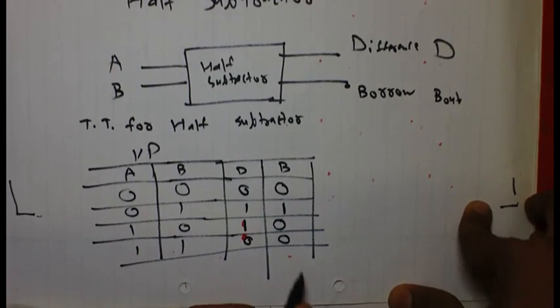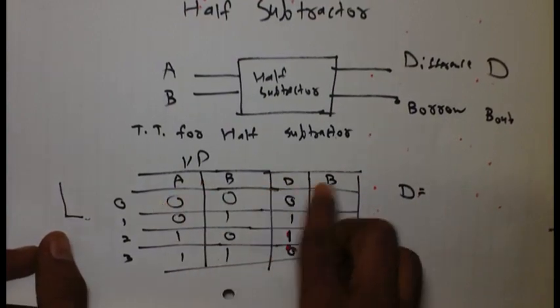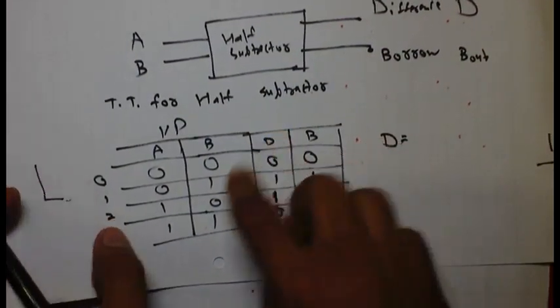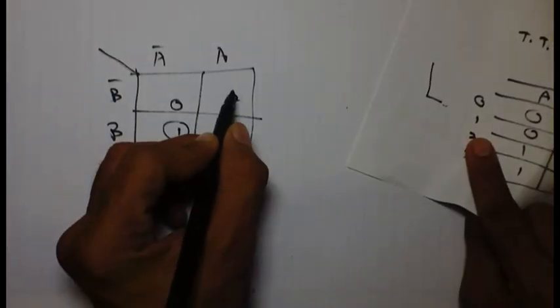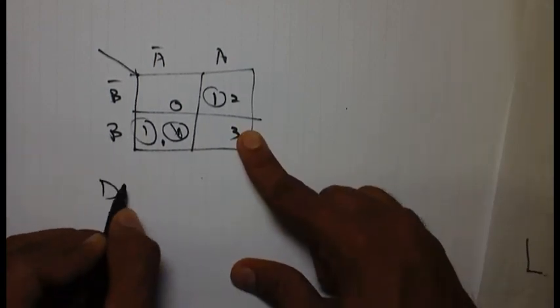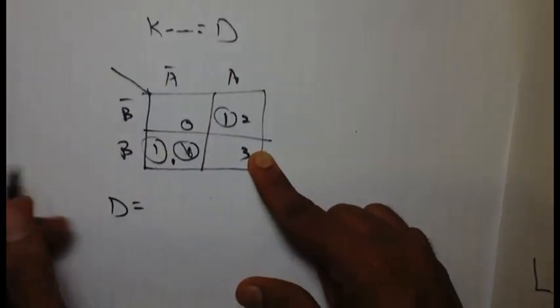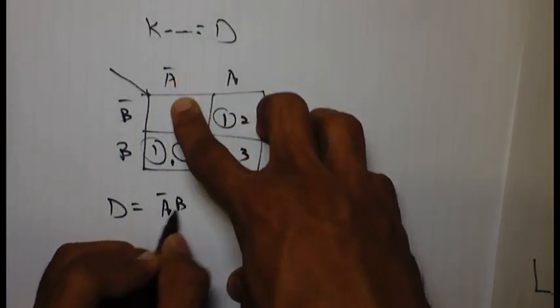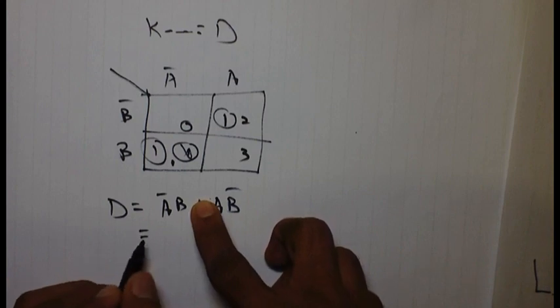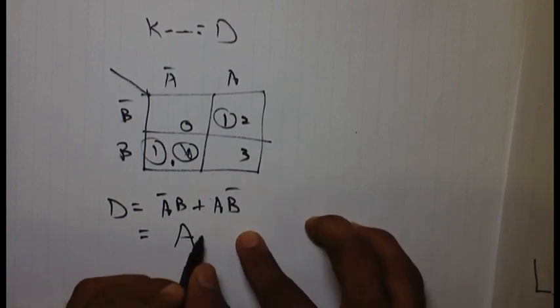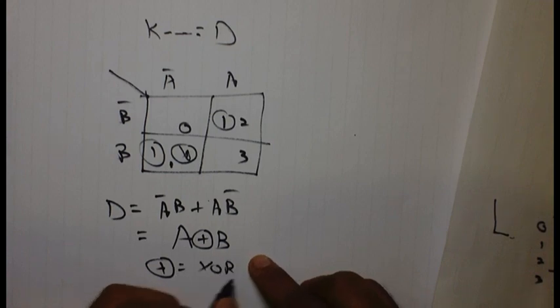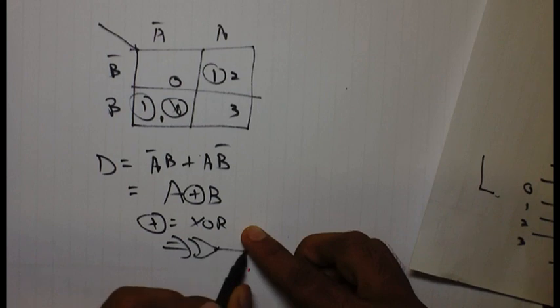Let's design the K map for difference and borrow. So now K map for difference. 1 and 1 are active, so D is equal to A bar B plus A B bar. If we see this is nothing but the syntax of XOR gate, so we can simply denote this as A XOR B. This is the Boolean expression of difference.